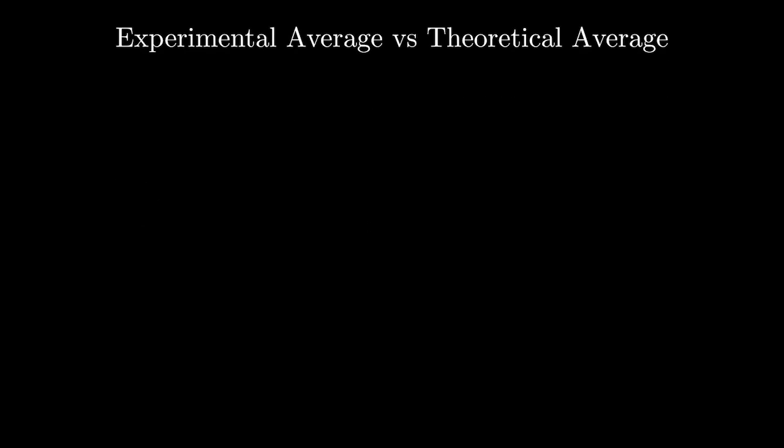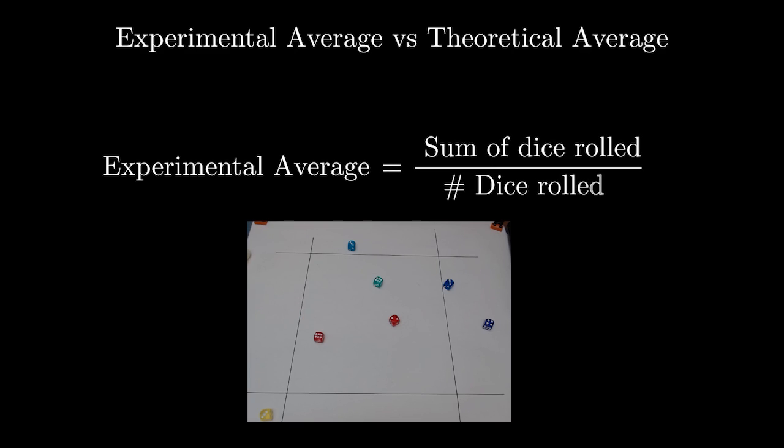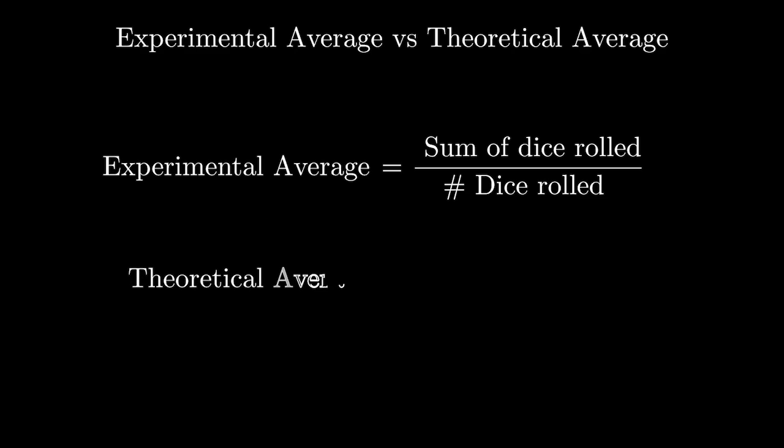To give a more familiar example, suppose that we were rolling dice instead of throwing noodles. The experimental average in this experiment is simply the sum of the dice rolled divided by the number of dice rolled. On the other hand, for an ordinary six-sided dice, we know that the theoretical average is simply the average of the sides. That's three and a half.